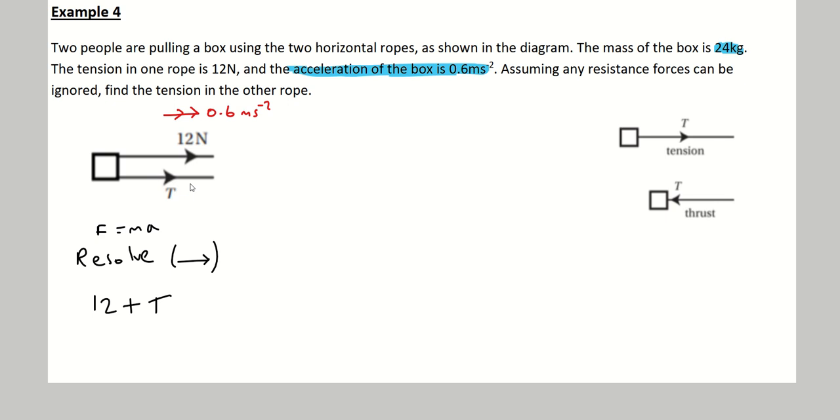When you pull something with a rope, it's a tension force that you're actually using. Tension is a pulling force. It's the force in a rope. When you pull something towards you, there's tension going towards you, tension in the rope, and that's what's causing the box to be pulled. So I've got 12 plus T acting in that direction. Those are the only forces acting on this box, and they're both acting to the right.